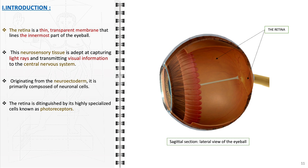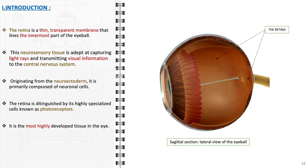These photoreceptors, comprising rods and cones, are responsible for enabling vision under various light conditions and for color perception. As the most highly developed tissue in the eye, the retina plays an indispensable role in our visual system, allowing us to perceive the intricate details and colors of the world around us.